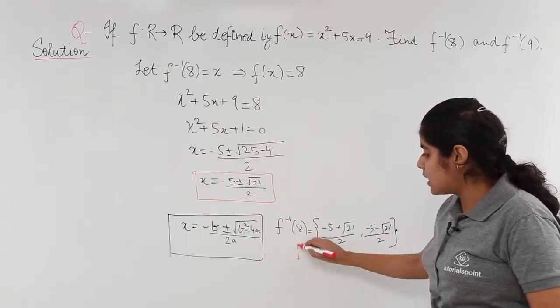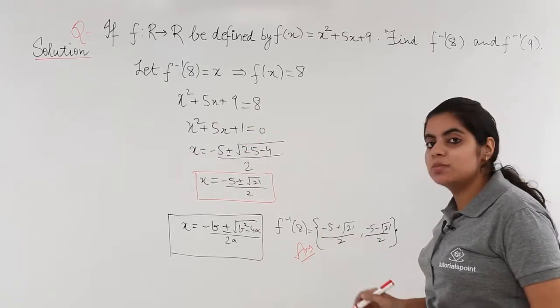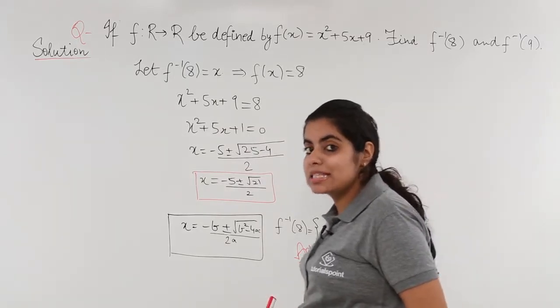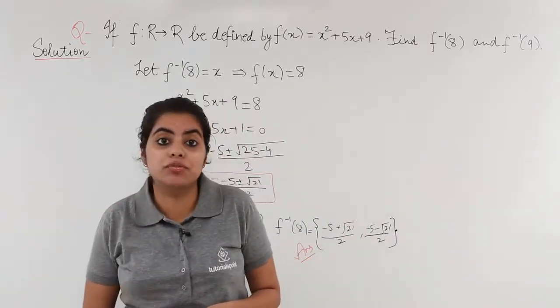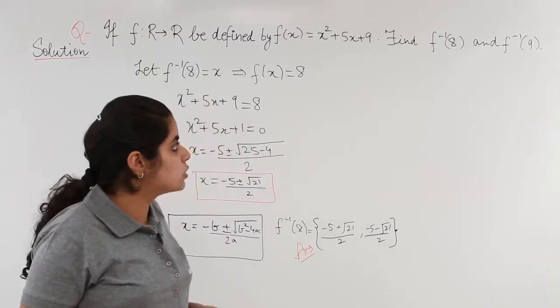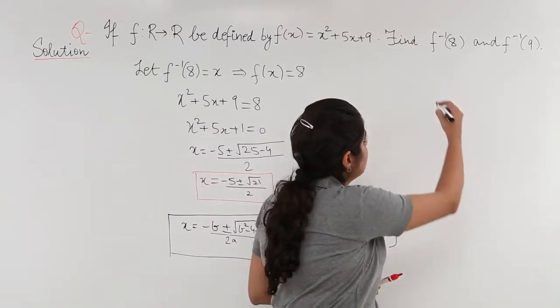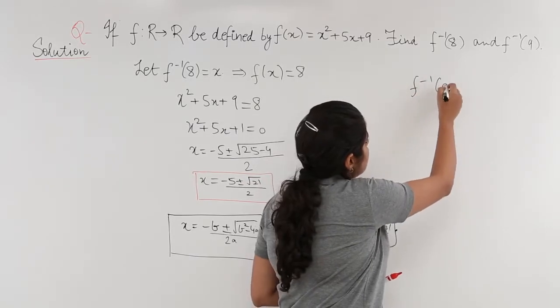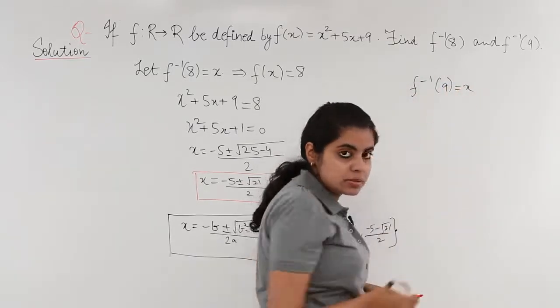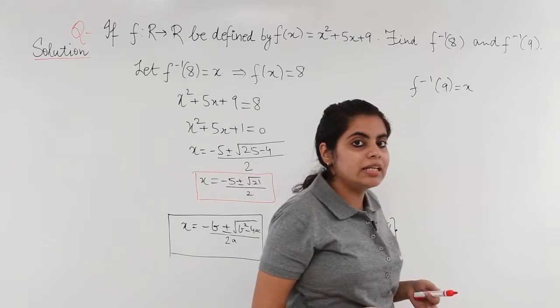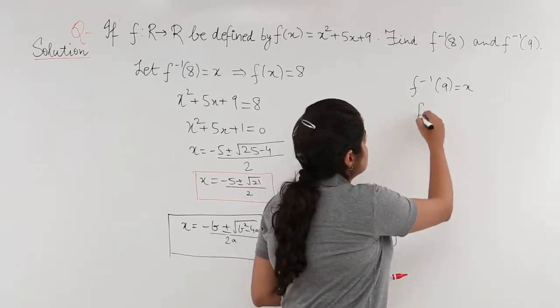Now after this answer the next thing that is being asked is f⁻¹(9). So we need to find out f⁻¹(9) also accordingly in the same manner. Let f⁻¹(9) is again x. Now if f⁻¹(9) is x, f(x) is equal to 9.